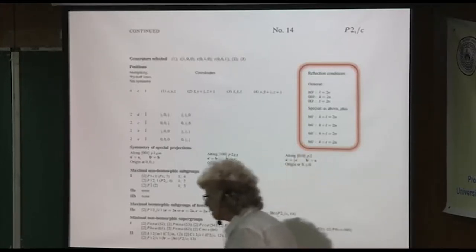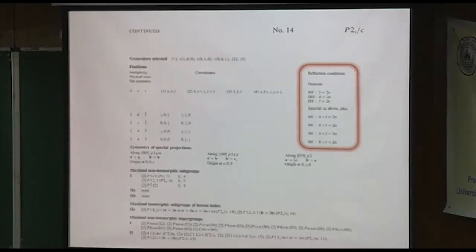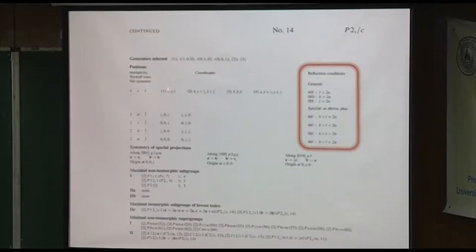00L is actually just a subset of the H0L condition. So it's really only the first two that are important — those are worth memorizing because you're going to see P21/C a lot. Also remember there are four general positions in P21/C — a good thing to remember.